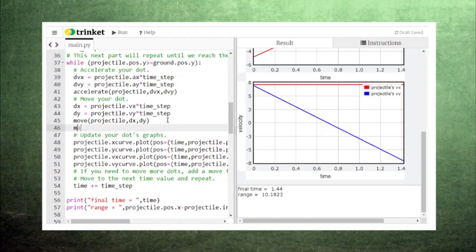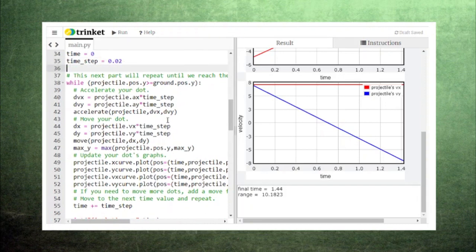Fortunately, Python has a built-in function called max that can do just that. When you use the max function, you enter two or more variables that you want the function to compare. The function will then pick out the largest of the values listed. It's like looking for a world record.